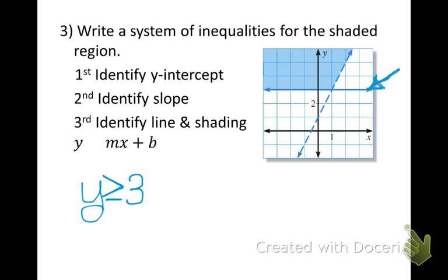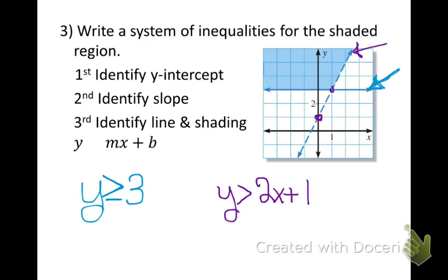For my second equation, my y-intercept is 1, so I'll have a plus 1. My slope is up 2 over 1, so 2 is my slope, giving me 2x. It is a dashed line and shaded above, so it is going to be greater than. My second inequality is y is greater than 2x plus 1. There is the system of inequalities that goes with this graph.